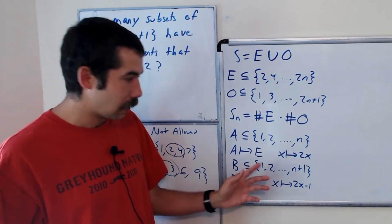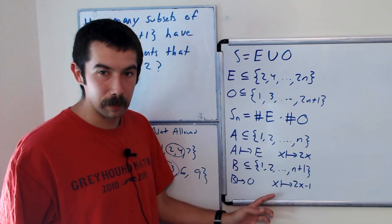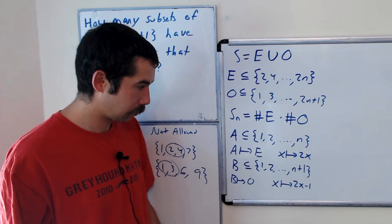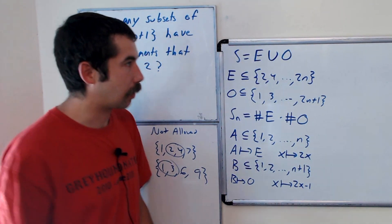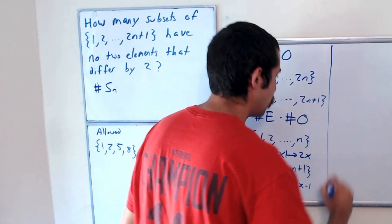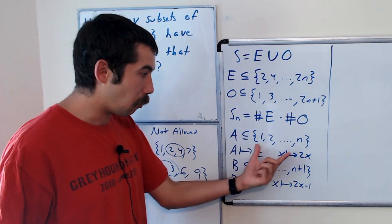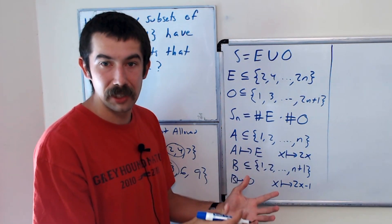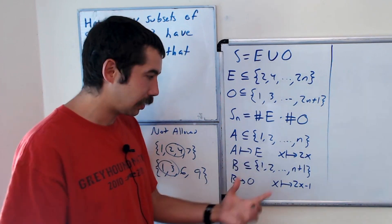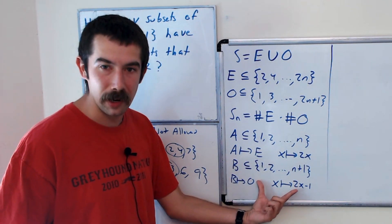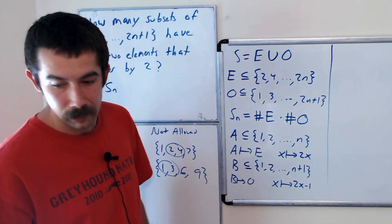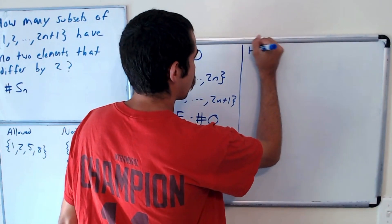Okay, so our entries will be sent to odd numbers. And what we want to do is we want to count how many subsets of 1 through N don't have consecutive entries, and how many subsets of N plus 1 don't have consecutive entries. So let's rewrite this as a question.